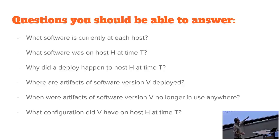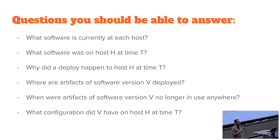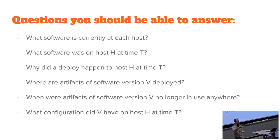Note that I use the phrase 'artifacts of a software version' rather than just 'software version.' This is because you can get into weird situations where it's a compromise of, say, your C compiler. If your C compiler is compromised, the compiler itself isn't deployed to any of your hosts — but things you built using that C compiler may be deployed to lots of your hosts. So you want to look at that whole supply chain.